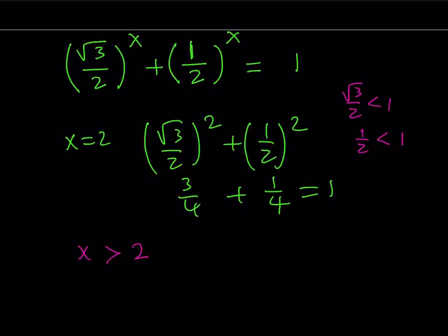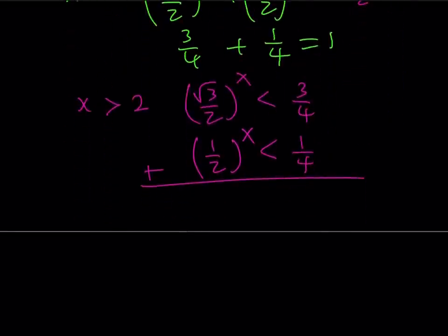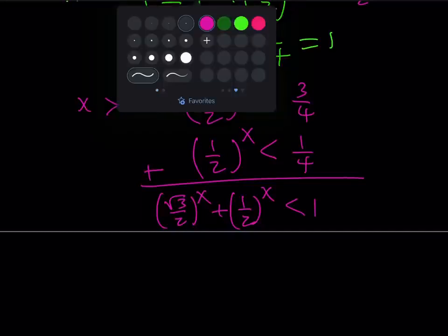What is that supposed to mean? Well, it means that this expression here is going to be less than, when x is greater than 2, this expression is going to be less than 3 fourths, because it's 3 fourths at 2. And the other expression, 1 half to the power x, is going to be less than 1 fourth. So, when you add these two expressions side by side, which is supposed to equal 1 based on our equation, their sum here is basically going to be less than 1. So, that means it's not going to equal 1. So, anything greater than 2 is not going to work, okay?